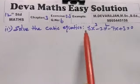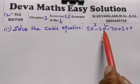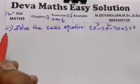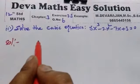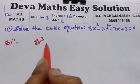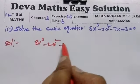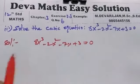Solve the cubic equation: 8x³ - 2x² - 7x + 3 = 0. We need to solve this given cubic polynomial.